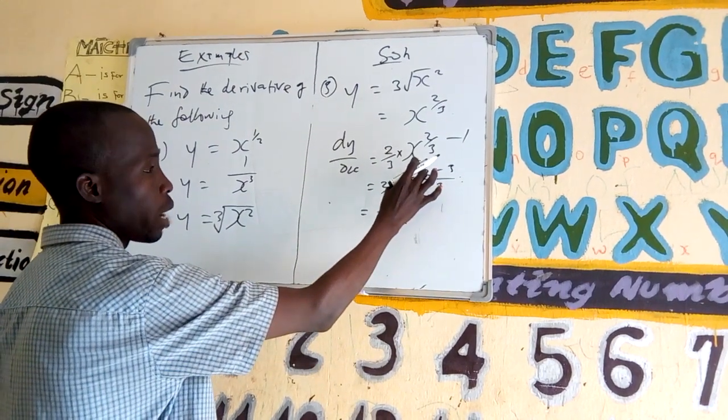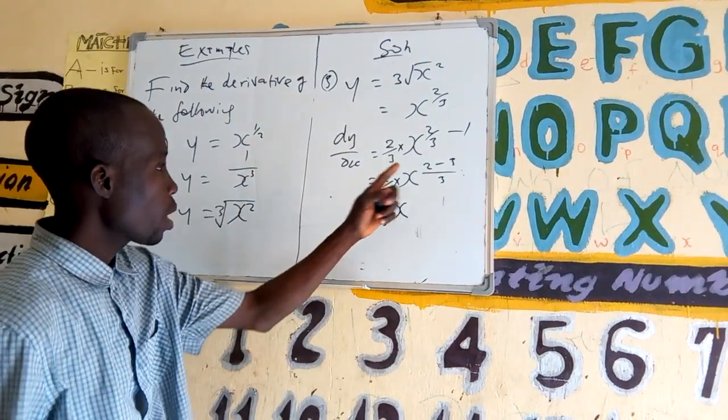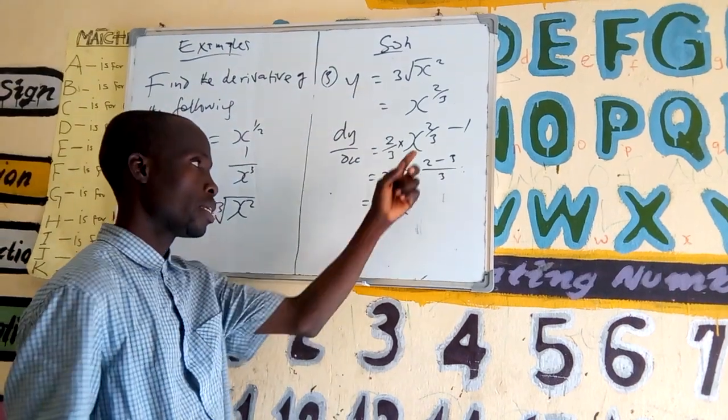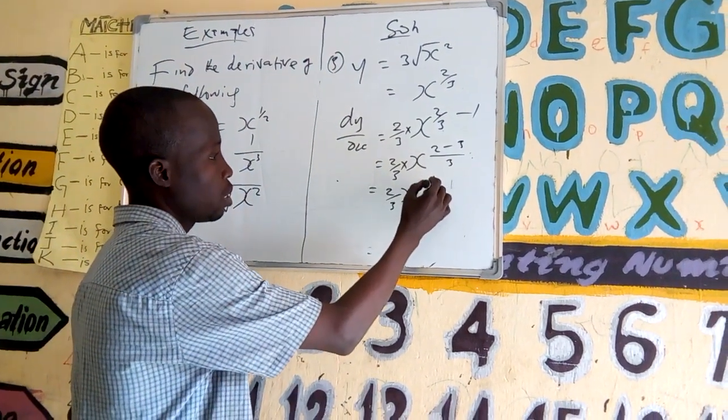So, now we will have dy by dx equals 2 over 3 times x to the power of minus 1 over 3.